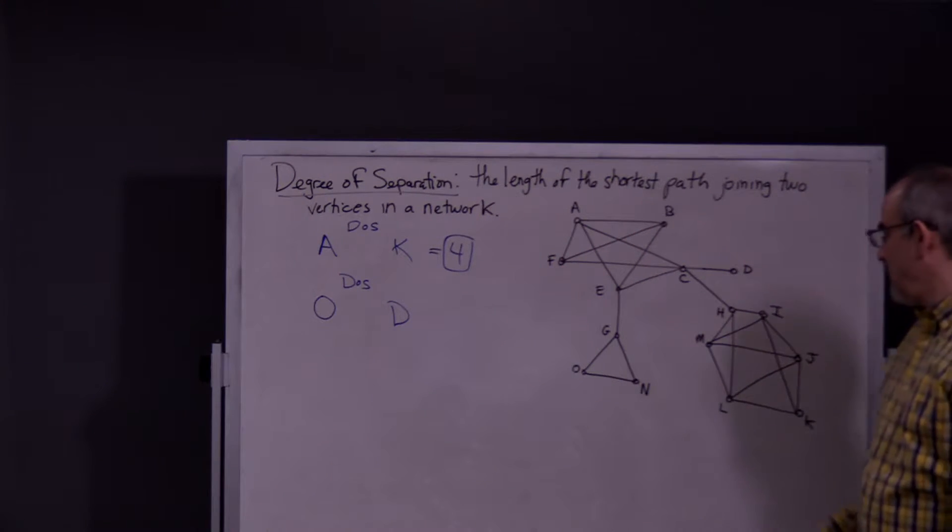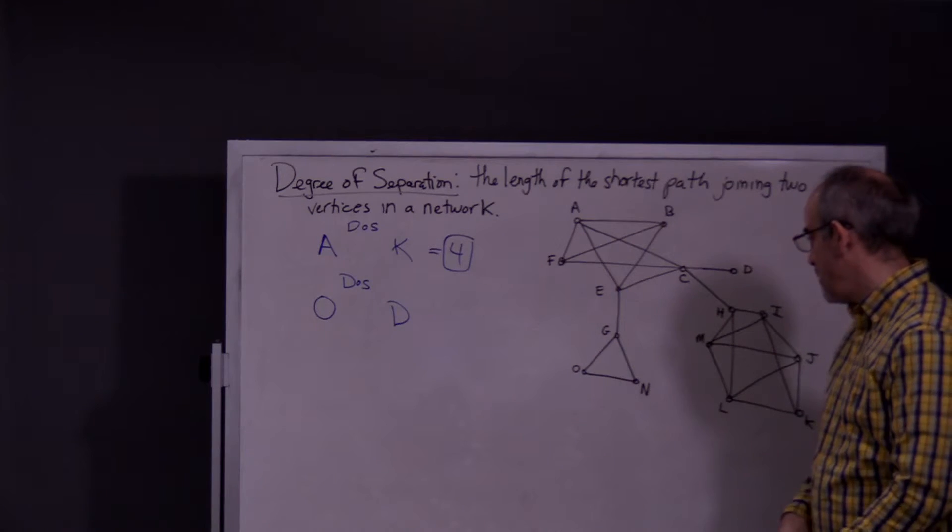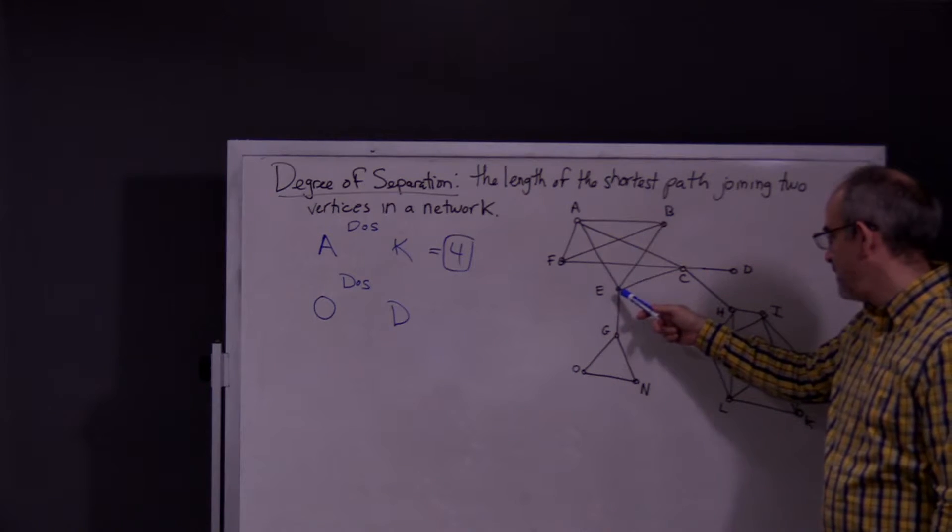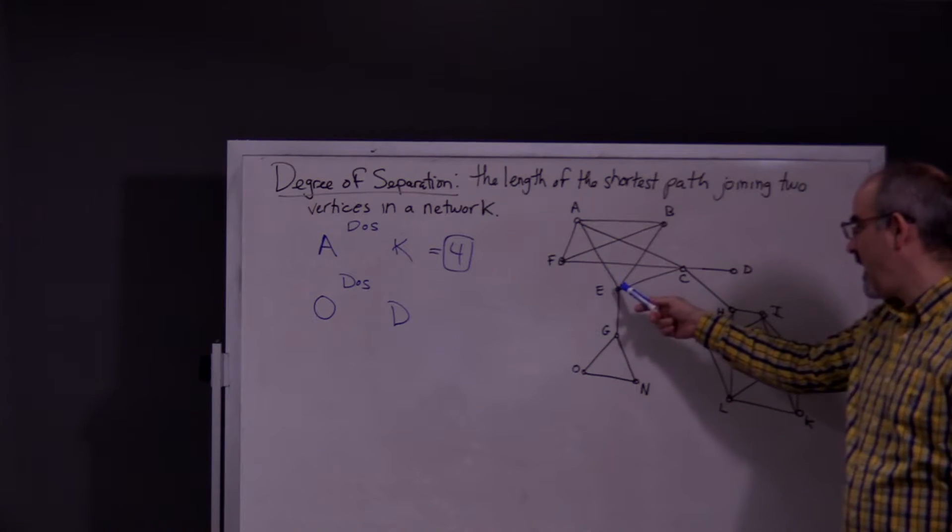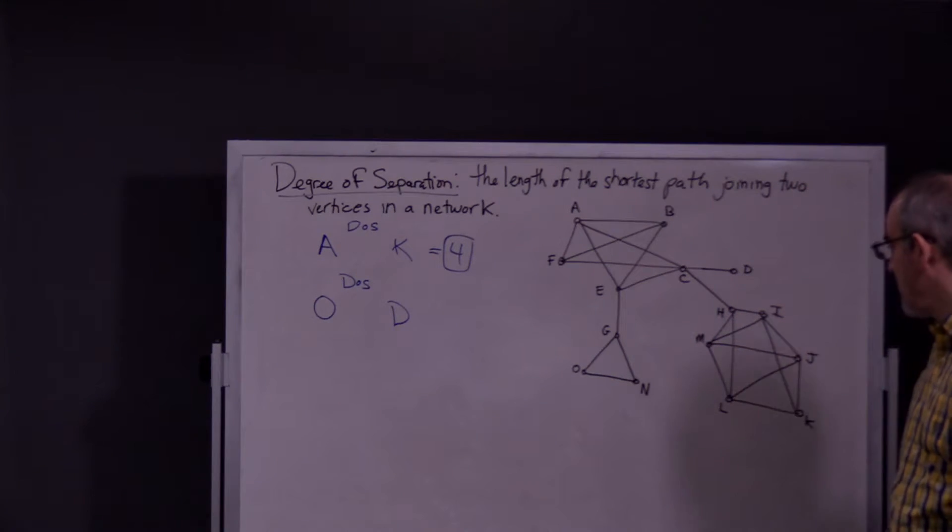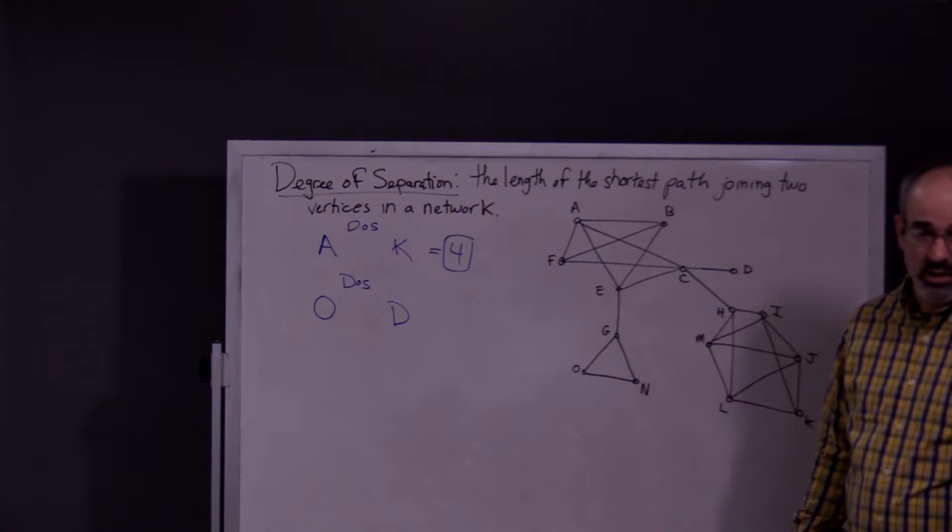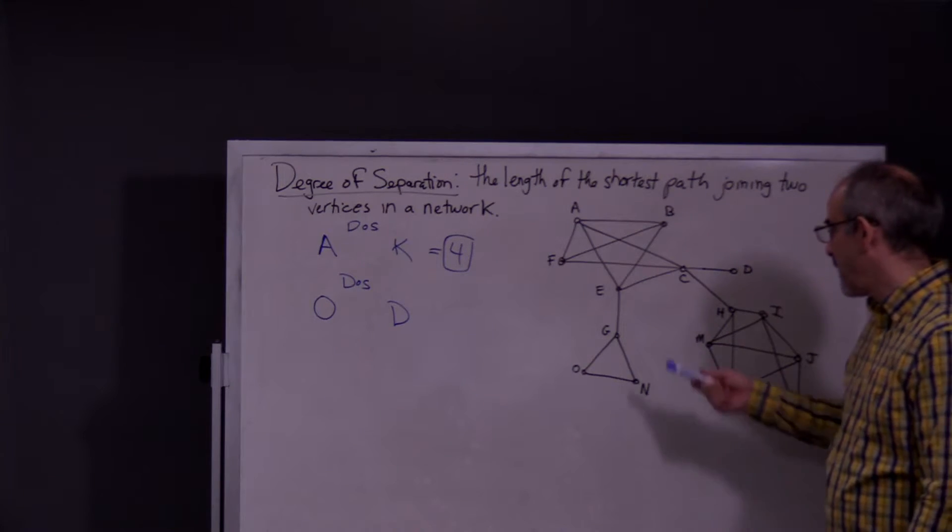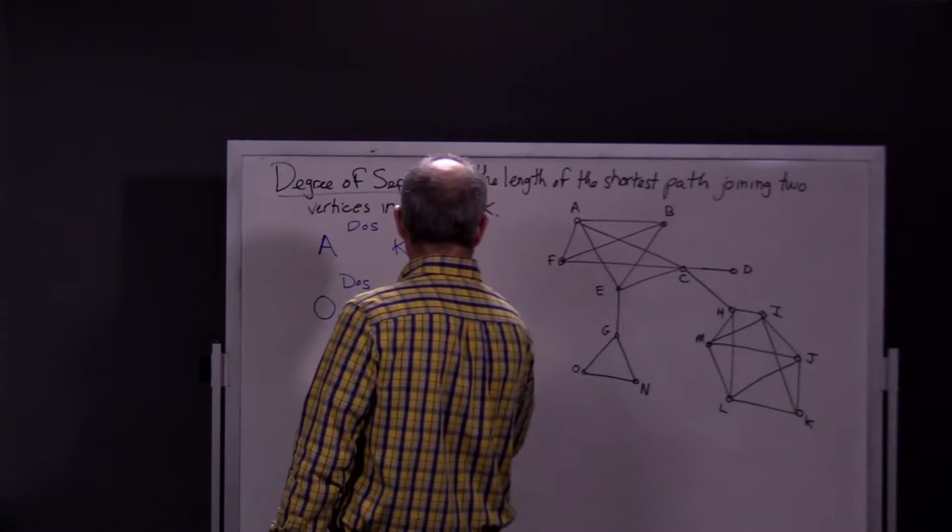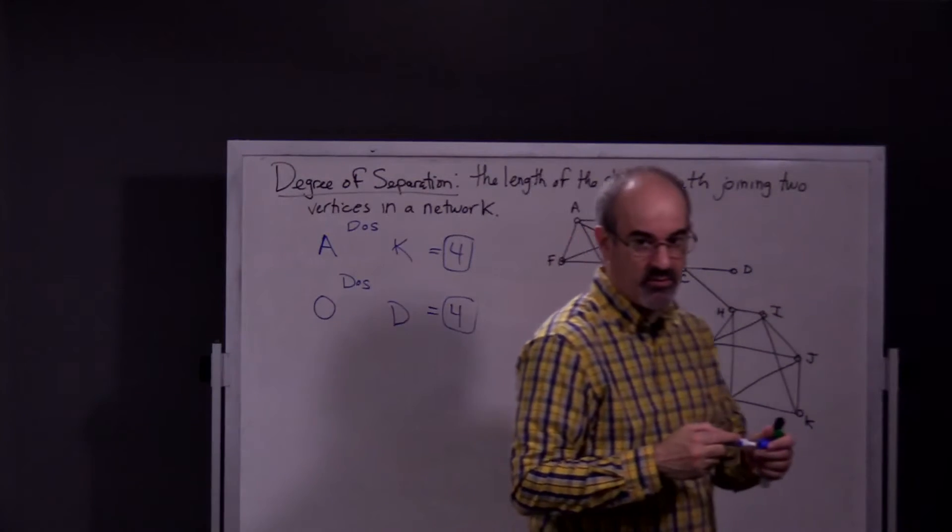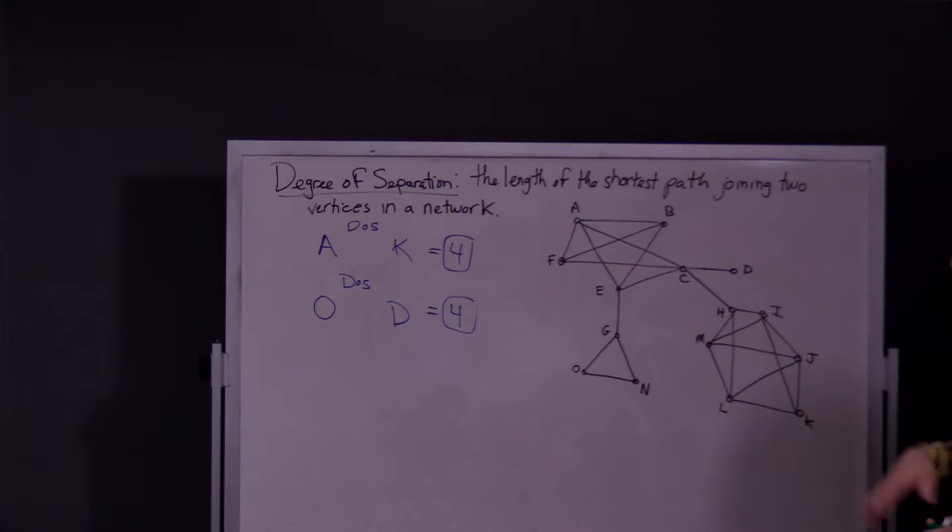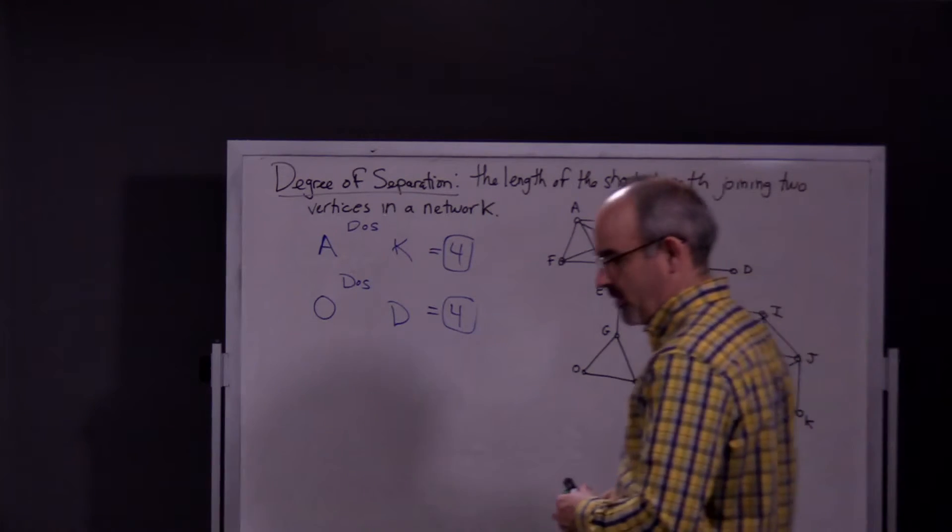Okay. So, O to G, then G to E is two. Then, to get to D from E, there isn't an actual path from E to D. So, we know it's going to be greater than one. So, if we can find one that's two, then that would be the best thing. So, you can go from E to C, then C to D. So, once again, this has a degree of separation of four. Okay. I'd like to do one that doesn't have the degree of separation of four.